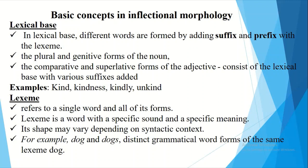In lexical base, different words are formed by adding suffixes and prefixes to the lexeme. The plural and genitive forms of nouns, and the comparative and superlative forms of adjectives, consist of the lexical base with the addition of various suffixes. For example, from the base lexeme 'kind', we get 'kindness', 'kindly', and 'unkind'.